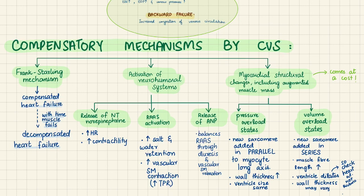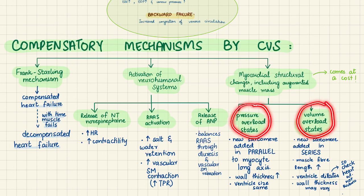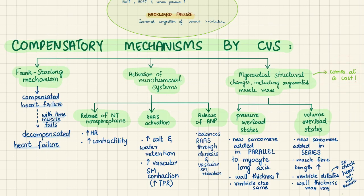The last compensatory mechanism involves myocardial structural changes. The myocardium undergoes structural changes to overcome the pressure overload and volume overload states it faces, typically by increasing muscle mass. However, increased muscle mass requires more oxygen and nutrients — without a corresponding increase in supply — and there will come a time when the heart can no longer feed this extra muscle.